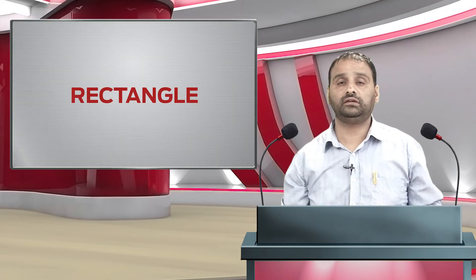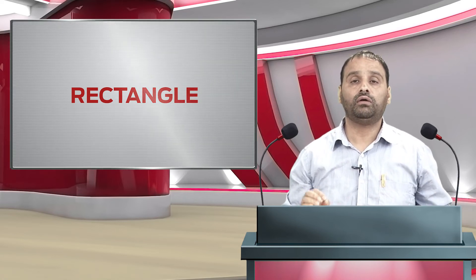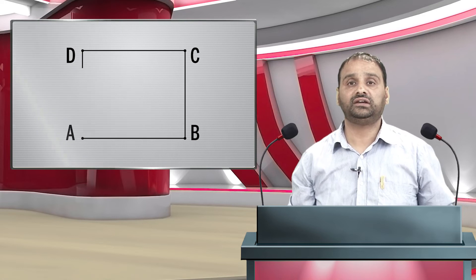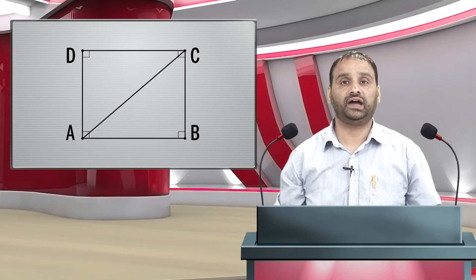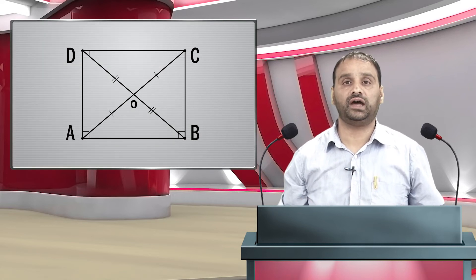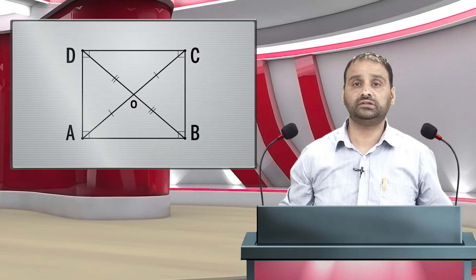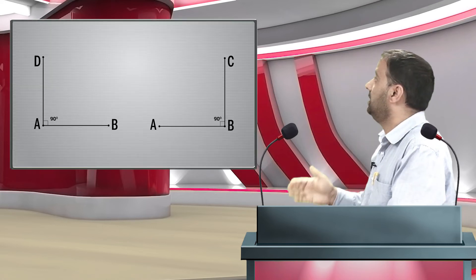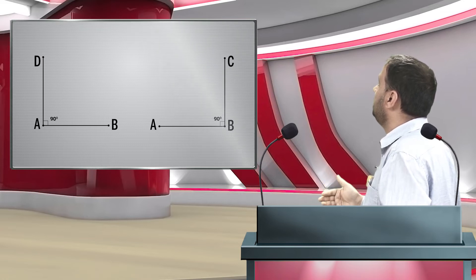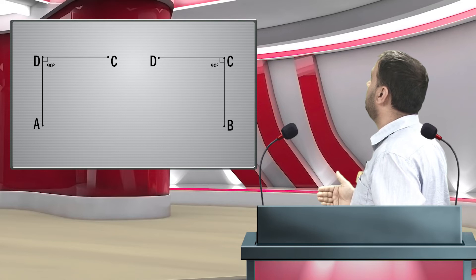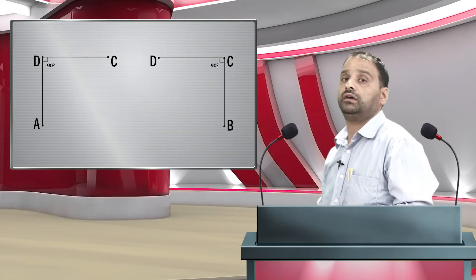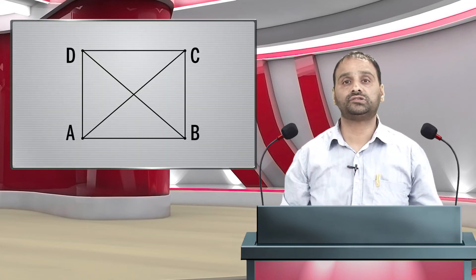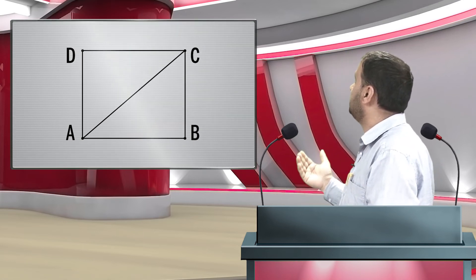A rectangle is a parallelogram, so all properties of a parallelogram are included: opposite sides are equal and parallel, and the diagonals bisect each other. In addition, a rectangle has equal diagonals and each of its angles is equal to 90 degrees. Angles BAD, ABC, BCD, and ADC are all equal to 90 degrees. The diagonals of a rectangle are equal: AC equals BD.